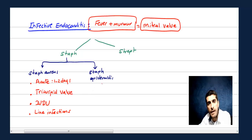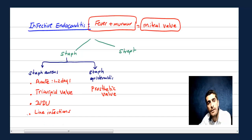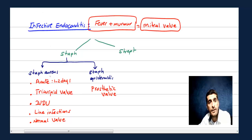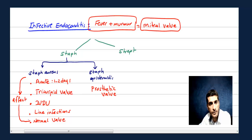When talking about Staph epidermidis, the key point is prosthetic valve. By the way, with Staph epi, the valve is usually normal to start with — Staph epi affects the normal valve. And again, mitral valve is the most common valve affected.